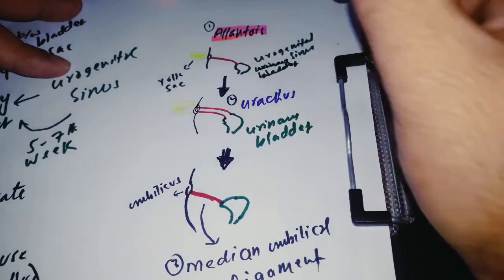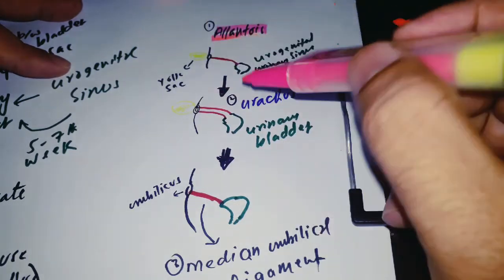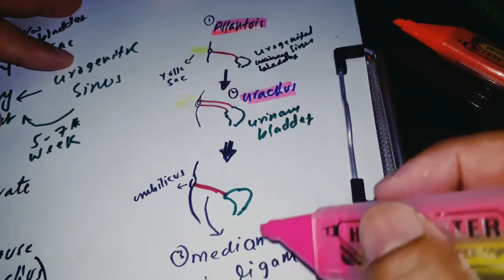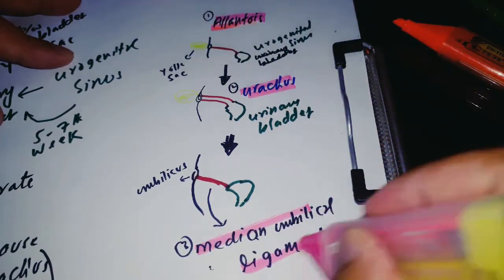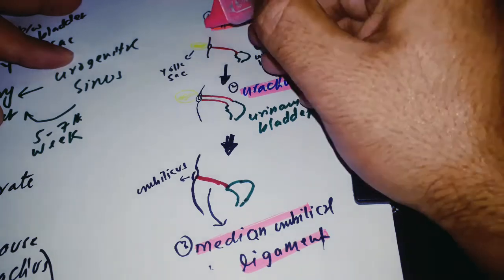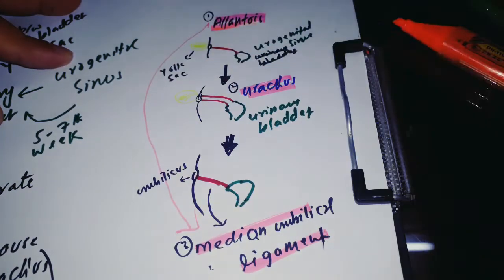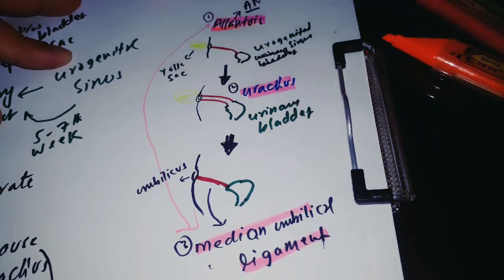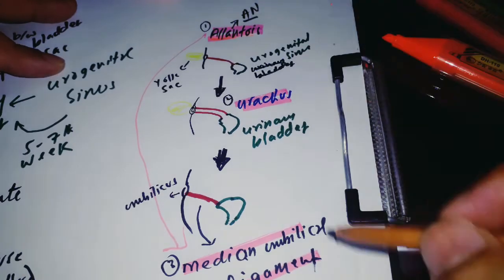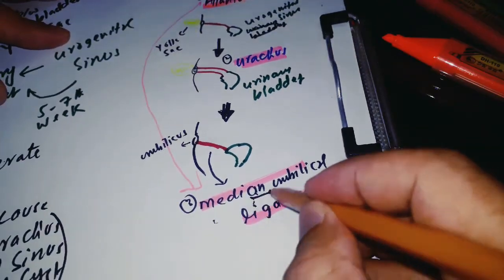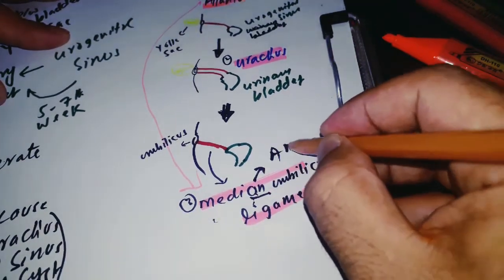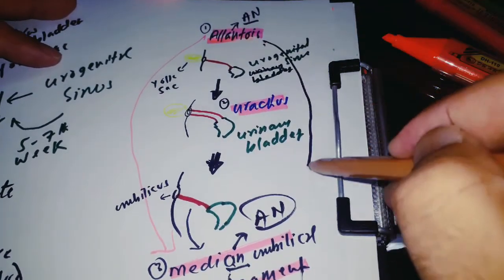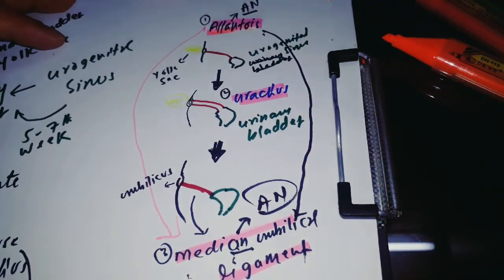The allantois gives us the median umbilical ligament. To remember this: in the word 'allantois' there is 'an', and in the word 'median' there is also 'an' — so that is how you remember that the allantois gives us the median umbilical ligament.